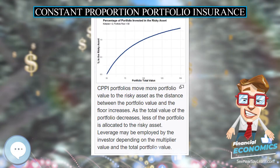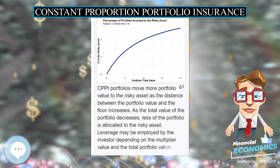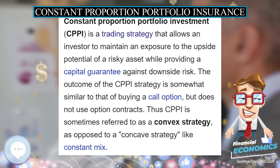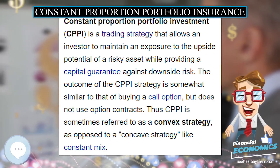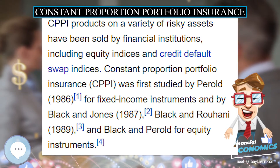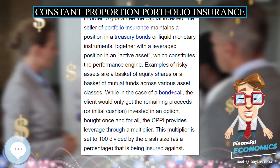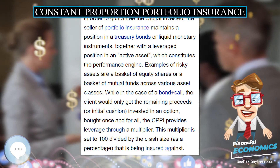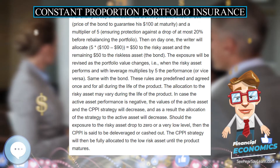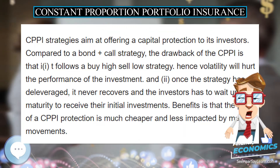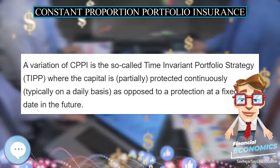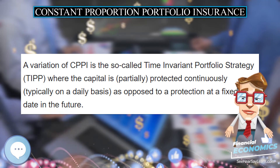While in the case of a bond plus call, the client would only get the remaining proceeds or initial cushion invested in an option bought once and for all, the CPPI provides leverage through a multiplier. This multiplier is set to 100 divided by the crash size as a percentage that is being insured against. For example, say an investor has a $100 portfolio, a floor of $90 (the price of the bond to guarantee $100 at maturity), and a multiplier of 5, ensuring protection against a drop of at most 20% before rebalancing.